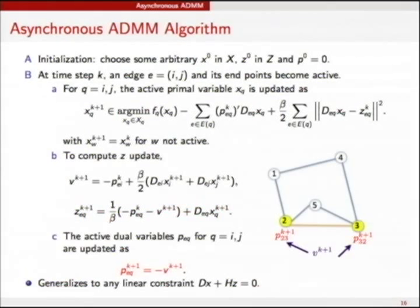And turns out this has more general applications than what we had. So, so far we've been talking about the problem sum of fi of xi subject to xi equal xj. And turns out this asynchronous distributed ADMM can be applied to more general constraint of the form dx plus hz equal to zero.